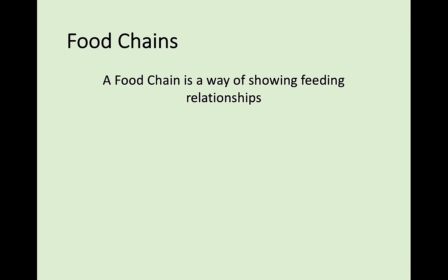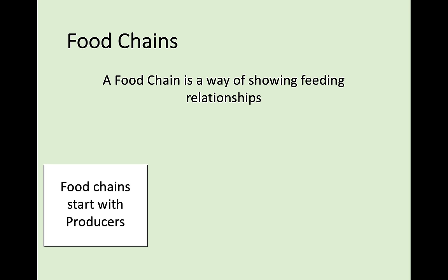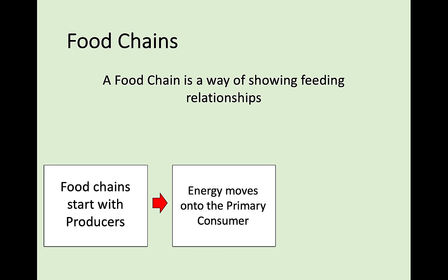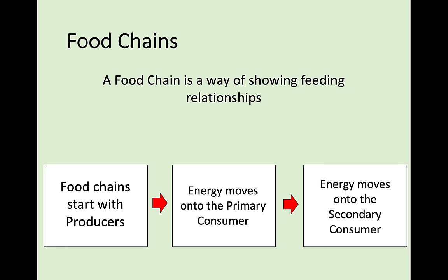A way of showing feeding relationships through an ecosystem is called a food chain. Food chains start with producers, then an arrow goes to a consumer. The first consumer is called the primary consumer, and the next is the secondary consumer. What you must remember is what the arrows mean — the arrow shows the direction of energy flow in an ecosystem. It shows energy being passed from producer to primary consumer, then to secondary consumer. It is not showing what eats what; it is the flow of energy.